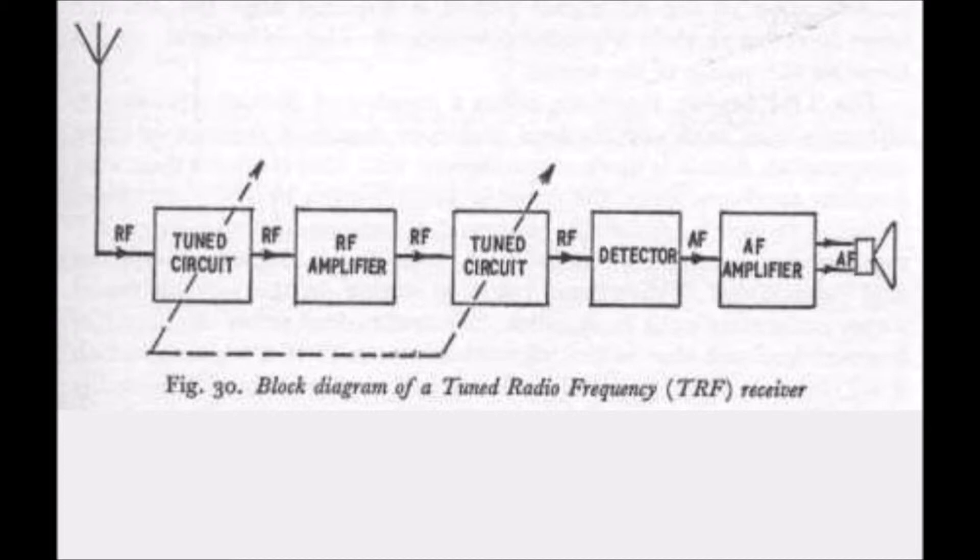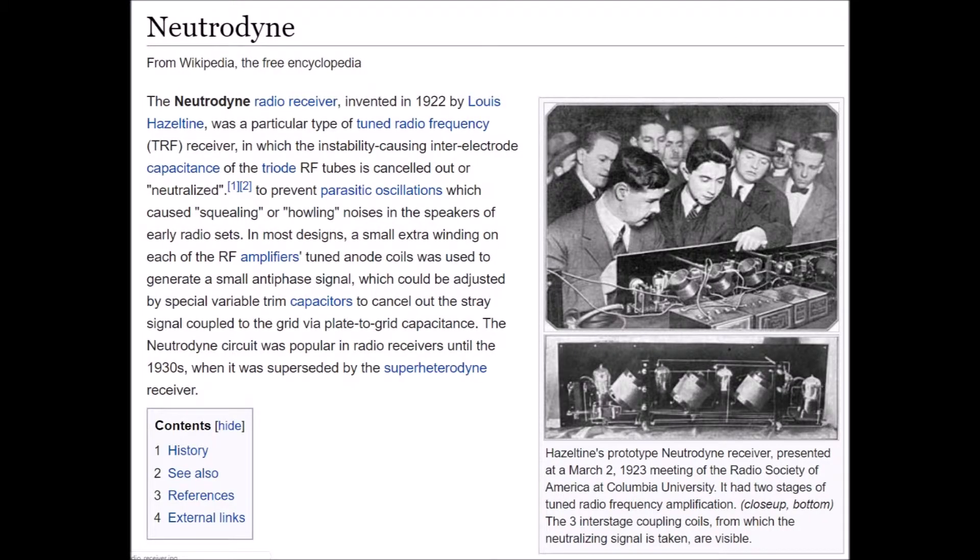Alignment refers to setting up the variable tuned stages accurately with each other. Neutralization refers to control of internal feedback due to the internal capacitance of transistors, which, if not controlled, could lead to the RF amplifier stage becoming unstable and oscillating continuously, producing a howl or whistle in the loudspeaker or phones.